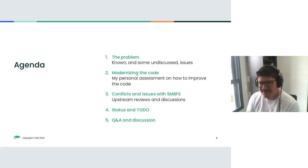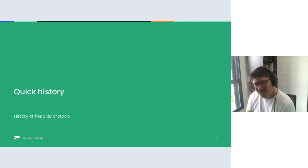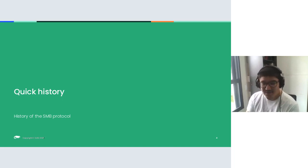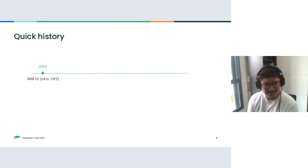This is the agenda. I'd like to start with a quick history of the SMB protocol, which is a proprietary protocol from Microsoft. They released SMB1 in 1996 to support file sharing, printer sharing, and other resources across the network.